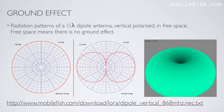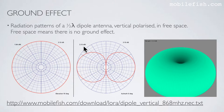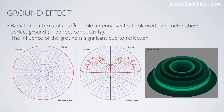Here are the radiation patterns of a half-wave dipole antenna, vertical polarized in free space — the radiation pattern in the horizontal plane, in the vertical plane, and in 3D. Free space means there is no ground effect. This particular half-wave dipole antenna has a maximum gain of 2.13 dBi. Here are the radiation patterns of the same antenna vertical polarized 1 meter above perfect ground. Perfect ground means perfect conductivity — the ground reflects the signal upwards. The maximum gain is now 5.34 dBi.